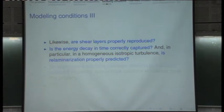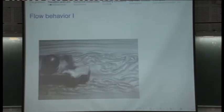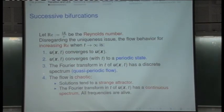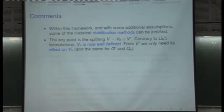That is what is called relaminarization, and it has to be properly predicted. A laminar flow does not mean a stationary flow. A laminar flow means a flow which only has large structures — it doesn't have a chaotic behavior, it only has large structures. Stages one, two, and three are laminar; stage four is chaotic or turbulent. That's what relaminarization is.